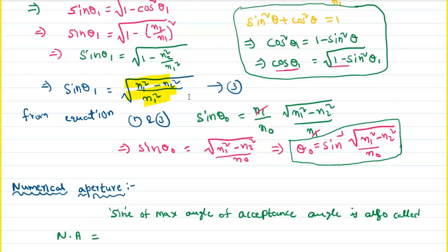N1 is the refractive index of the core medium. N2 is the refractive index of the cladding. N0 is the refractive index of air. Now, in today's class, we are going to continue with numerical aperture.